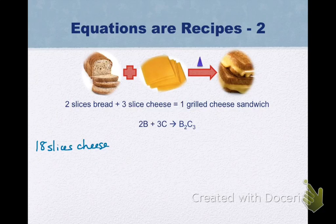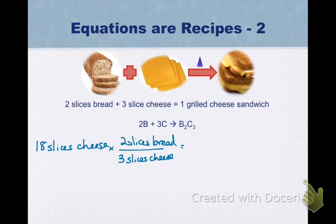So from 18 slices of cheese, I know that for every three slices of cheese, I use two slices of bread. And then I can take a look. My slices of cheese on top cancels with my slices of cheese on bottom. So I'd end up doing 18 times 2 divided by 3. And that would allow me to calculate that I need 12 slices of bread.